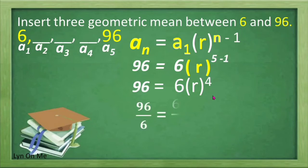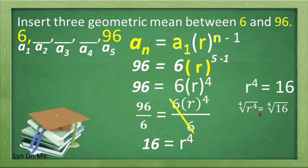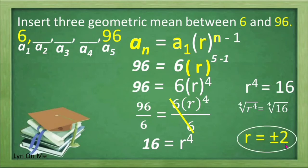Next, we divide both sides of the equation to eliminate the numerical coefficient of r raised to 4. Simplifying 96 divided by 6 gives us 16, so r raised to 4 is equal to 16. To solve for r and eliminate the exponent, we find the fourth root of r raised to 4 and the fourth root of 16. This gives us r is equal to positive and negative 2.